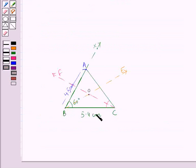Now, you can see here, we have drawn the bisectors of angle B as BE and bisectors of angle C as CF and these two are meeting at point O.